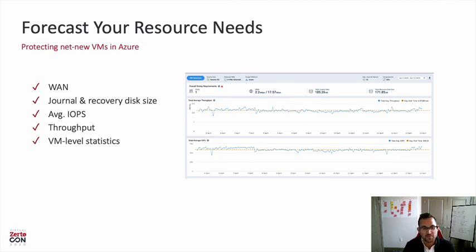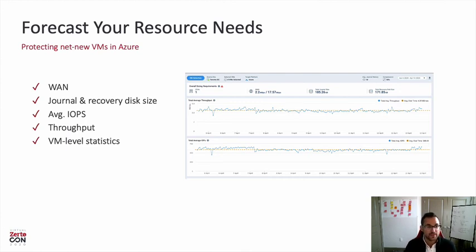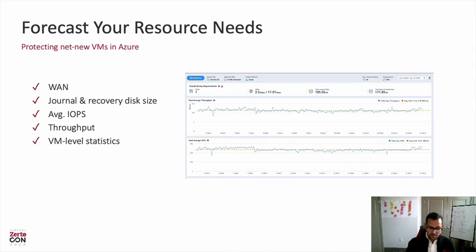Let's say you're already a Zerto customer simply using a secondary site for DR, or you're exploring Zerto and curious about the storage and infrastructure requirements for protecting VMs in Azure. There's a specific tool within Zerto Analytics available even to non-customers called the Resource Planner. Within the resource planner, you designate the VMs and applications you want to move to the cloud, and it forecasts your WAN requirements, storage requirements including journal and recovery disk size needs, your average IOPS, throughput, and VM-level statistics — giving you full visibility into how to size your environment for success with Azure and Zerto.